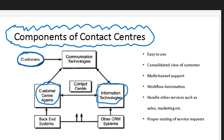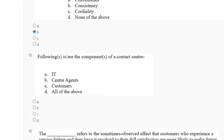The contact center components include the customer, center agent, and information technology — that means IT back-end systems and other CRM systems. So the correct answer for question number five is option D — that means IT, center agent, and customer.